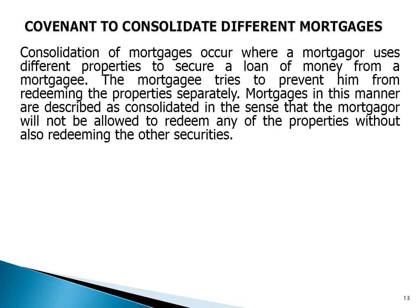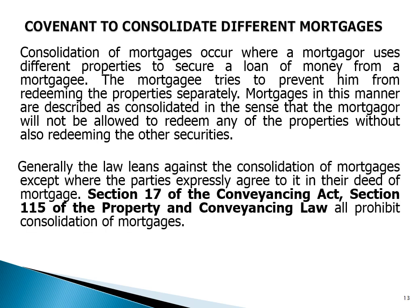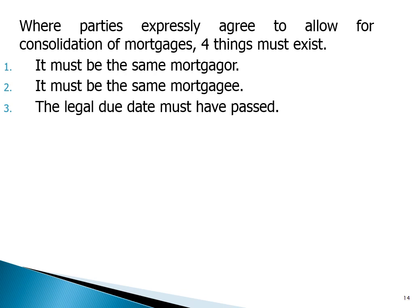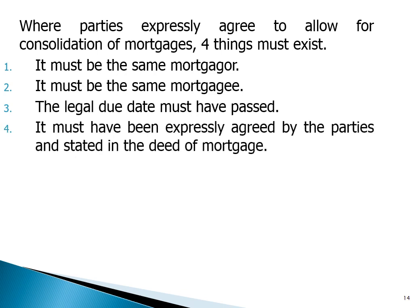Covenant to consolidate different mortgages: consolidation of mortgages occurs where a mortgagor uses different properties to secure a loan from a mortgagee, and the mortgagee tries to prevent him from redeeming the properties separately. Mortgages in this manner are described as consolidated, meaning the mortgagor will not be allowed to redeem any of the properties without also redeeming the other securities. Generally, the law leans against the consolidation of mortgages. Section 17 of the Conveyancing Act and Section 115 of the Property and Conveyancing Law prohibit consolidation unless parties expressly agree. For consolidation to apply, four things must exist: one, it must be the same mortgagor; two, the same mortgagee; three, the legal due date must have passed; four, it must have been expressly agreed by the parties as stated in the deed of mortgage.